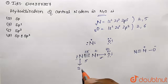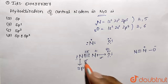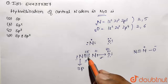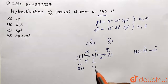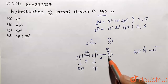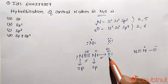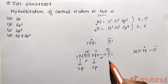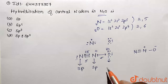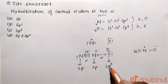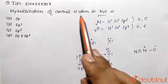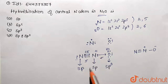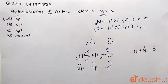Two orbitals correspond to sp hybridization, so the central nitrogen is sp hybridized. The terminal nitrogen also has one sigma bond plus another sigma bond — again two orbitals — so it is also sp hybridized. Oxygen has one sigma bond and three lone pairs, requiring four orbitals, giving sp³ hybridization. Since we are asked about the central nitrogen, the answer is sp hybridization, which is option A.